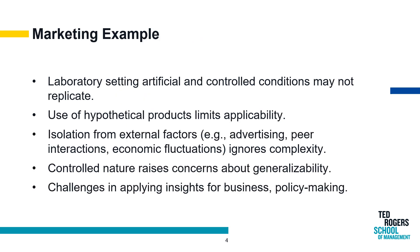Consider an experiment examining consumer behavior in a controlled laboratory setting, where participants are tasked with making purchasing decisions for hypothetical products presented in a simplified environment. While this experimental design might offer precise control over variables, the external validity is likely low. The artificial nature of the laboratory, the absence of real-world stimuli, and the use of hypothetical products create a scenario that diverges significantly from the complexities of actual consumer behavior in the marketplace. In reality, consumers navigate a dynamic landscape influenced by factors such as real product attributes, market competition, advertising strategies, peer opinions, and economic conditions. The gap between the controlled experimental conditions and the multifaceted nature of real-world consumer experiences raises concerns about the generalizability of findings and the applicability of insights to authentic consumer decision-making scenarios outside the confines of the laboratory.